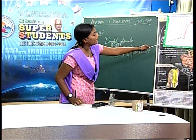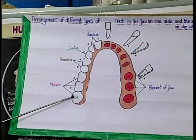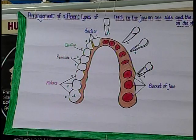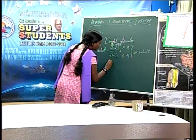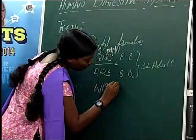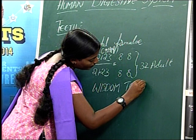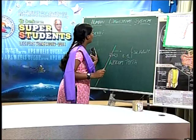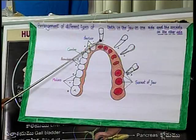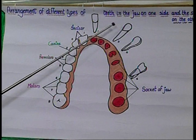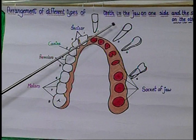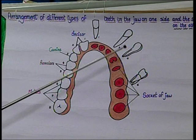The third molar teeth appear very late, above the age of 21, so they are called wisdom teeth. Incisors are chisel-shaped and used for cutting. Canines are dagger-shaped and used for tearing. Premolars and molars are used for grinding and chewing.